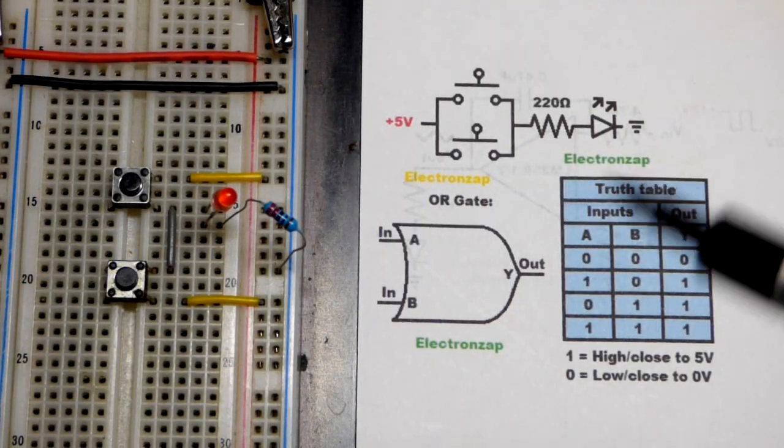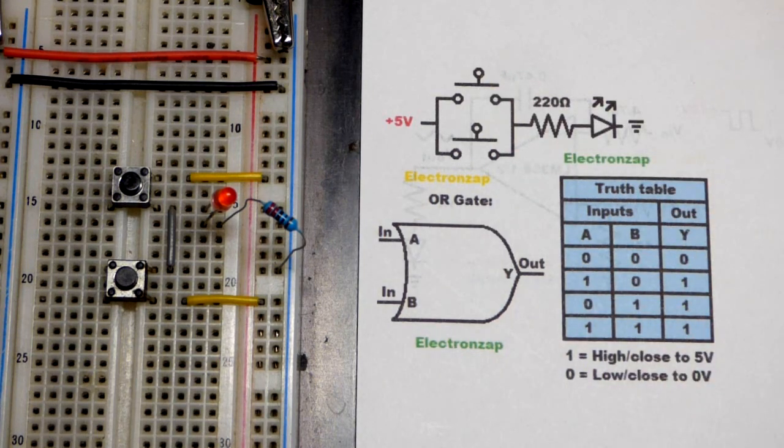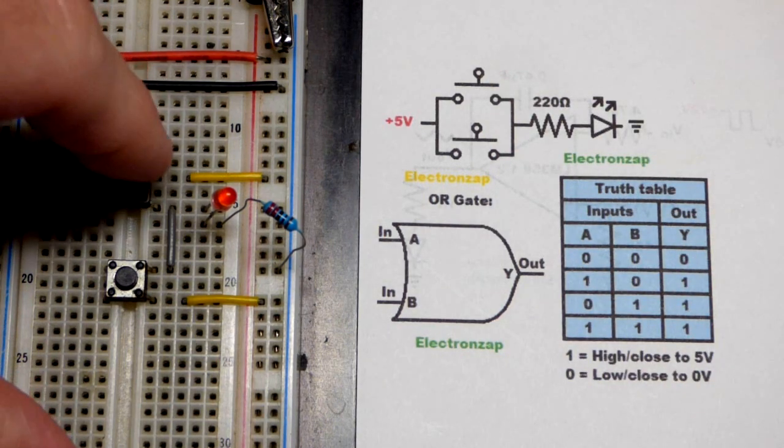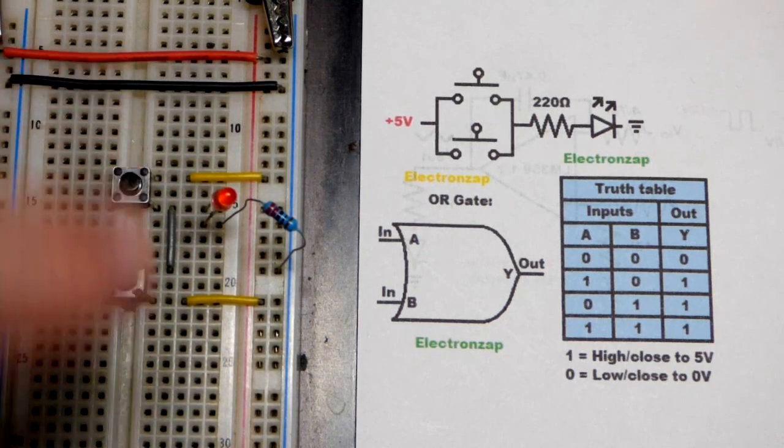So now in this video we're going to look at a very simple circuit. This is just a demo circuit, probably won't come across this exact circuit in real life, but in any case we have the LED that's off right now because both switches are off.